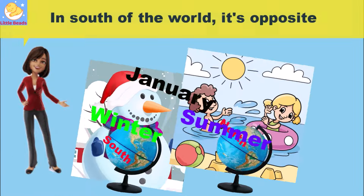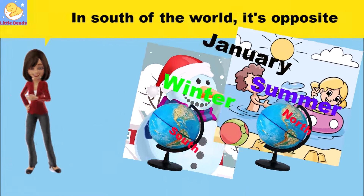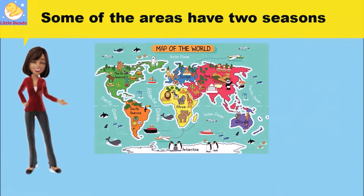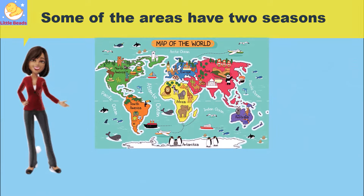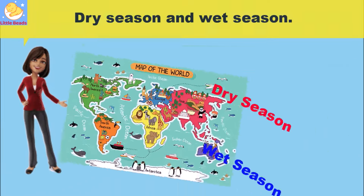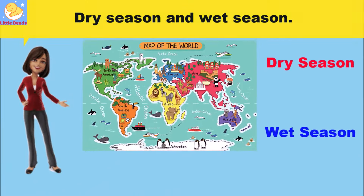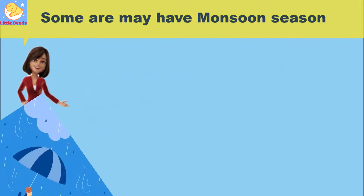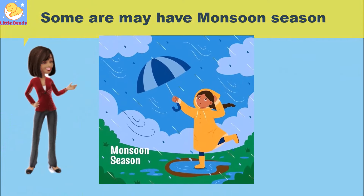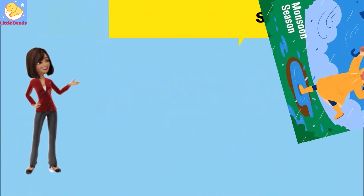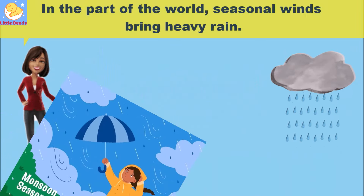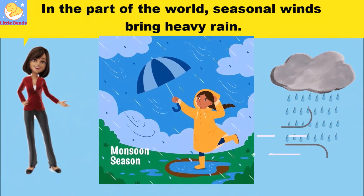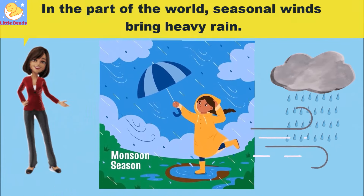In the south of the world, it's opposite. Some areas have two seasons: dry season and wet season. Some areas may have a monsoon season, where seasonal winds bring heavy rain.